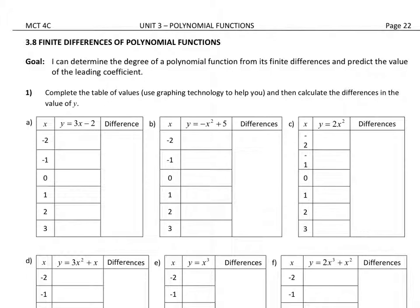We're going to complete the table of values using graphing technology to help you and calculate the difference in the value of y. When I say graphing technology, I'd like you to put the equation into Desmos. In the top corner where you put the equation, there's a gear symbol. If you tap on that, it's going to pop up some headings including a table of values option. If you tap on that, it will bring up a table of values for that particular equation you've entered.